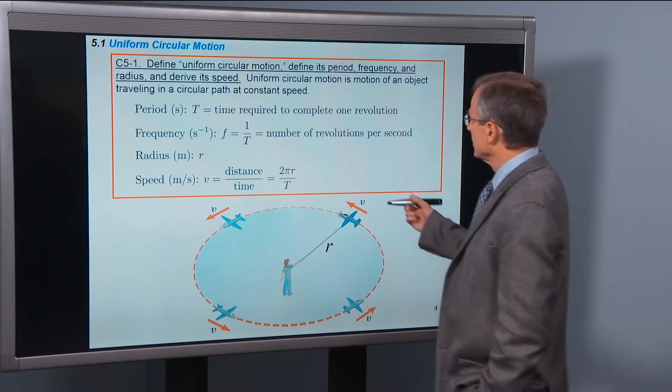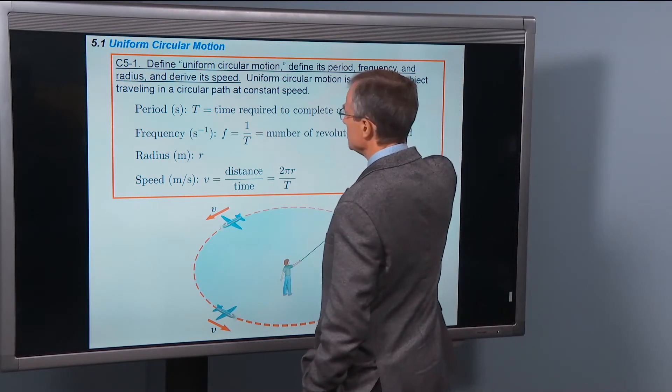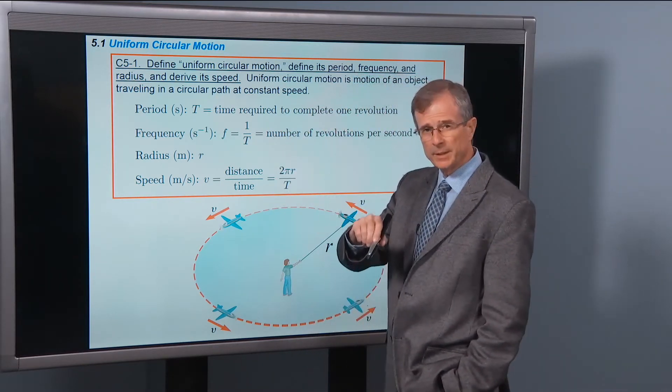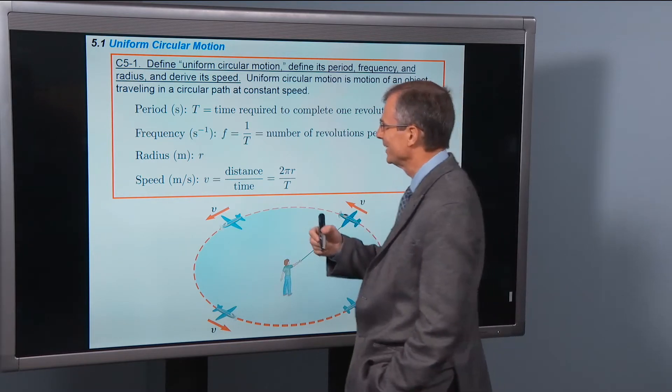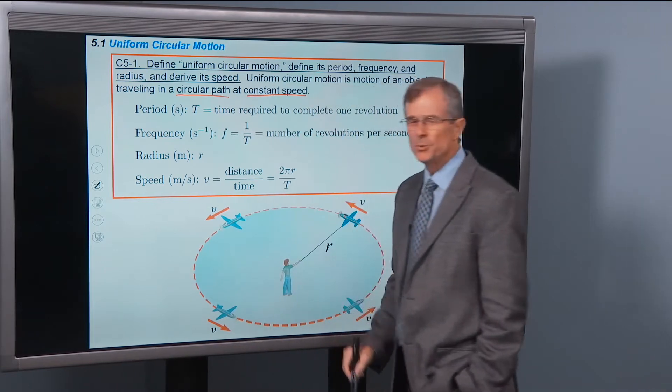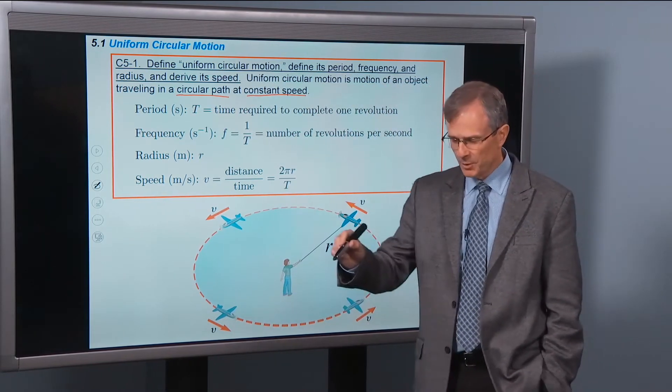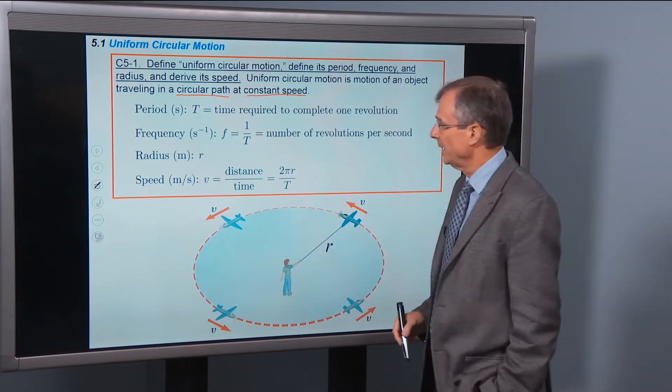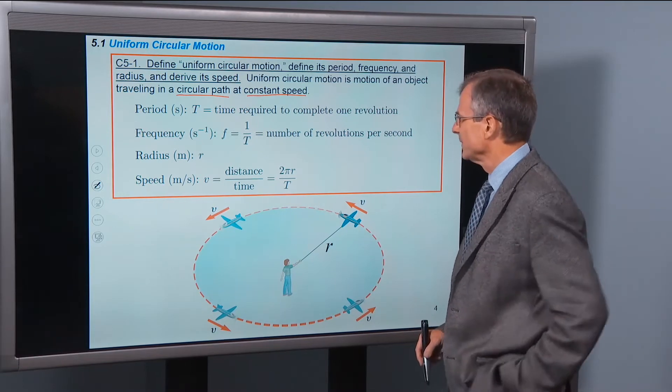So uniform circular motion is motion of an object traveling in a circular path at a constant speed. So those are the two elements that are important. It has to be going at a constant speed, and it has to be going in a circular path.